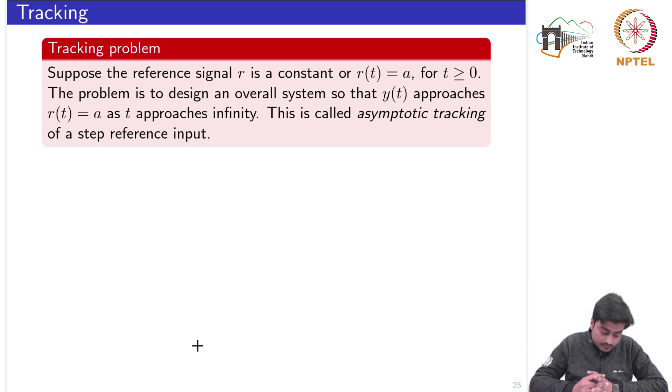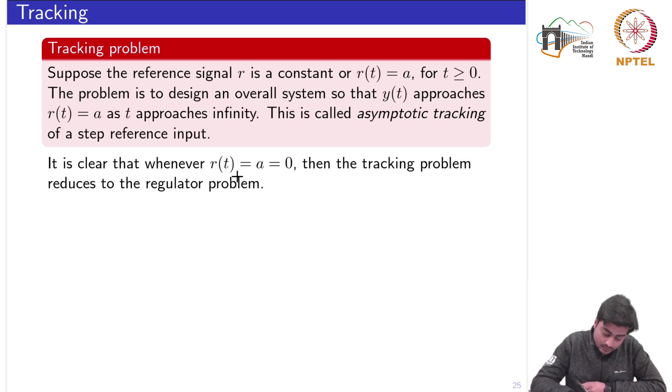Within these two classification of the state feedback control design problem, if you suppose R(t) for A is equal to zero, then the tracking problem would reduce to the regulator problem.